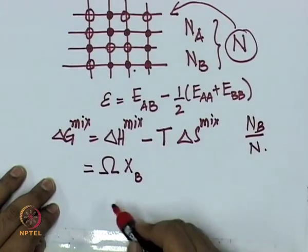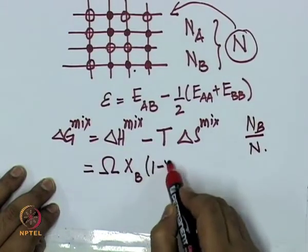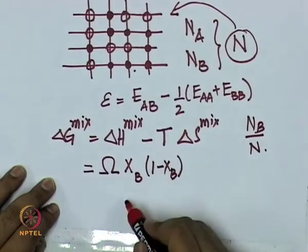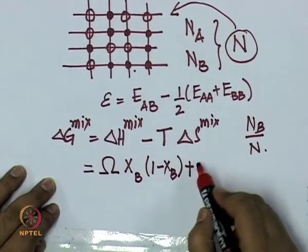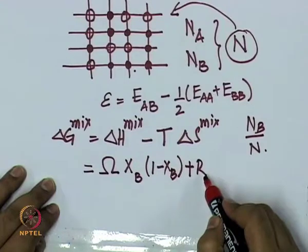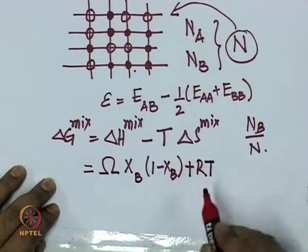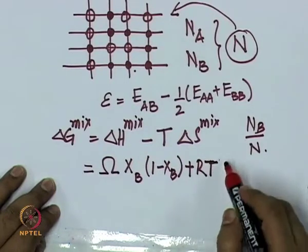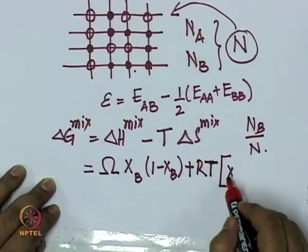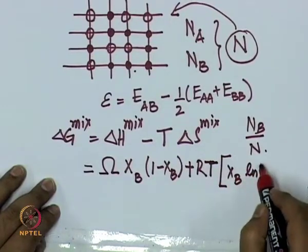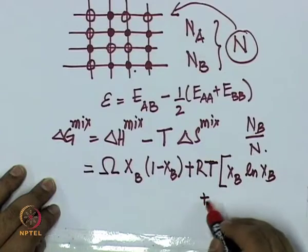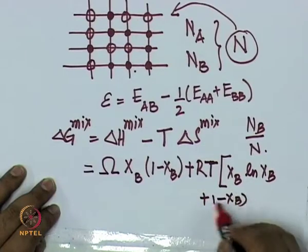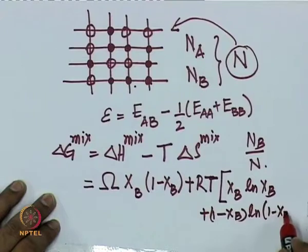times (1 - xB), plus RT, where R is the universal gas constant and T is absolute temperature, times [xB log xB + (1 - xB) log(1 - xB)].